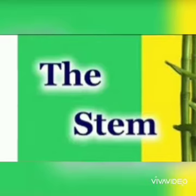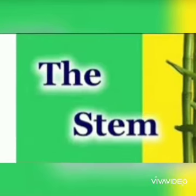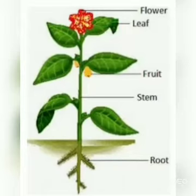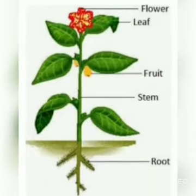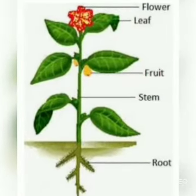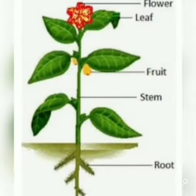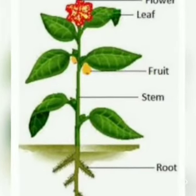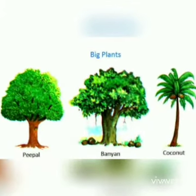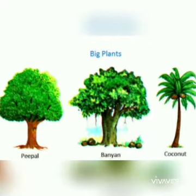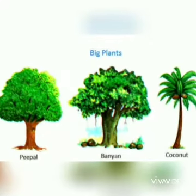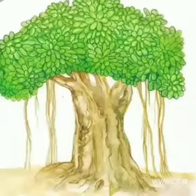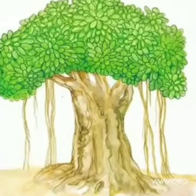The stem forms the main support of the plant. It bears branches, leaves, buds, flowers and fruits. The stem of trees like banyan tree and neem is hard, thick and woody. This is called trunk.